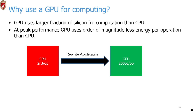Why would we consider using GPUs for general computing? It turns out the way GPUs are designed, they use a larger fraction of a given area for computation than a CPU does. That means if you can design your code to take advantage of it, you can have your program run with an order of magnitude less energy per operation than a CPU. The caveat is you have to rewrite your code — but programmers were willing to do that because they could harness this and get better efficiency.